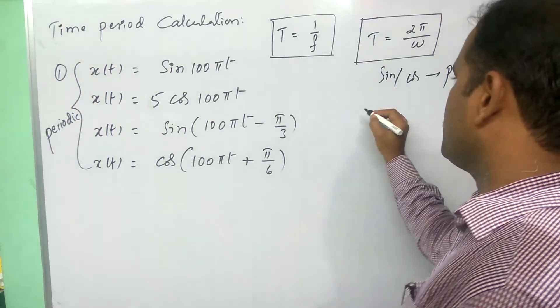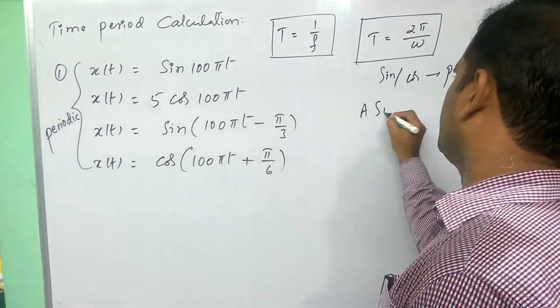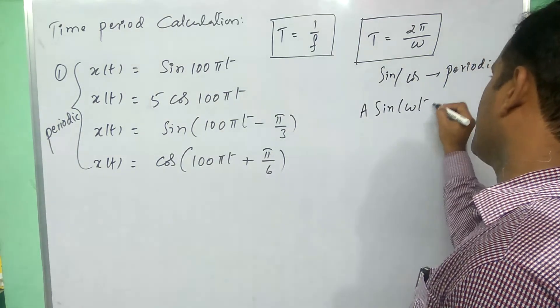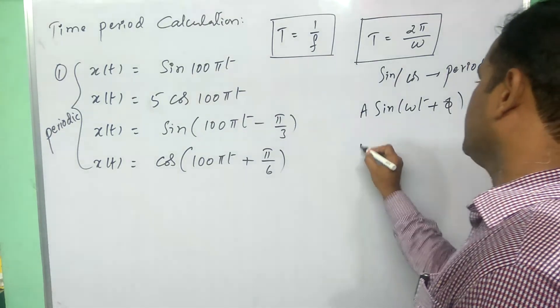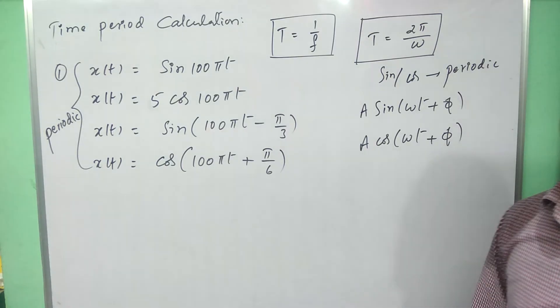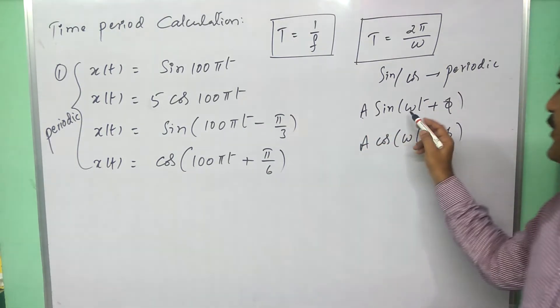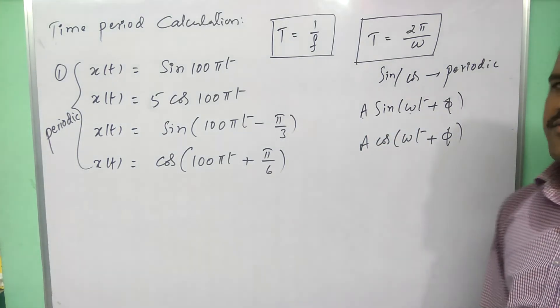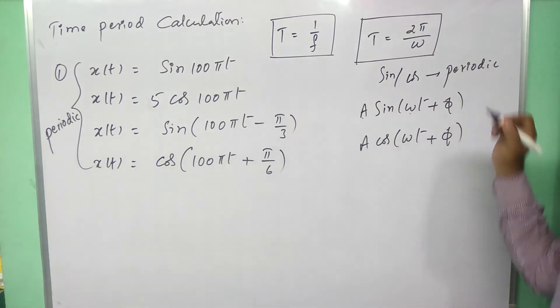General standard form of sinusoidal signals are A sine omega t plus phi or A cos omega t plus phi. Here, A is amplitude, omega is frequency and phi is phase shift.